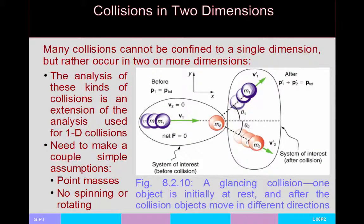Very often a collision is not confined to one dimension, so we need two or sometimes three dimensions to define it. For glancing collisions — where one ball hits another and they bounce off at angles — we need to make a couple of simple assumptions: that the objects are point masses, and that we don't want them to spin or rotate. If they start rotating, we have to include angular momentum.